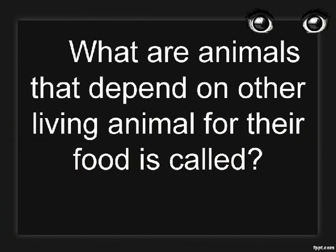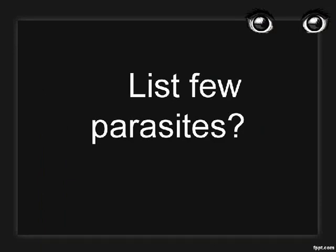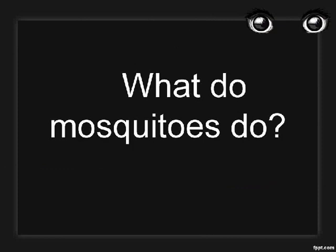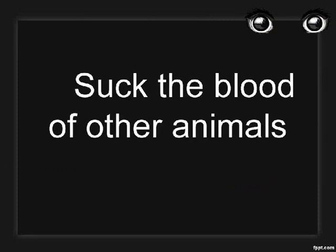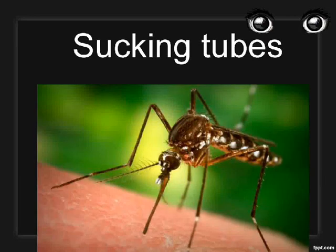What are animals that depend on other living animals for their food called? Parasites. List a few parasites: mosquitoes, fleas, and leeches. What do mosquitoes do? They suck the blood of other animals. How do mosquitoes suck blood? Using sucking tubes.